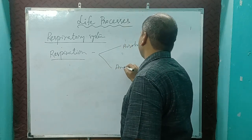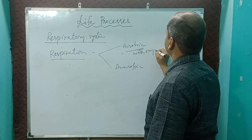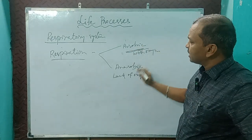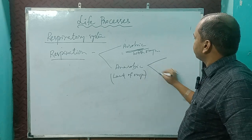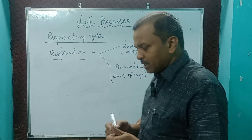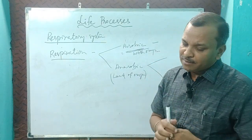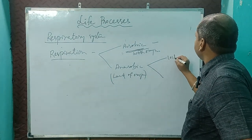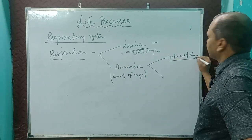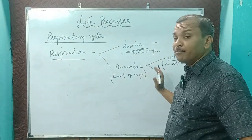Aerobic means oxygen is present; anaerobic means lack of oxygen. In anaerobic respiration, for example when we do hard exercise, our muscles produce lactic acid plus a small amount of energy. This occurs in muscle cells in the human body.